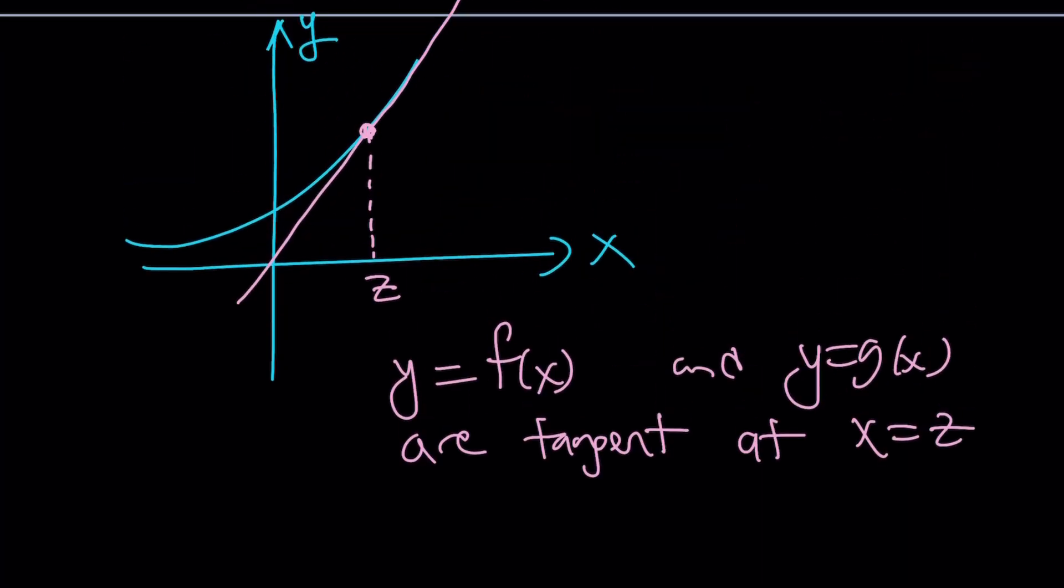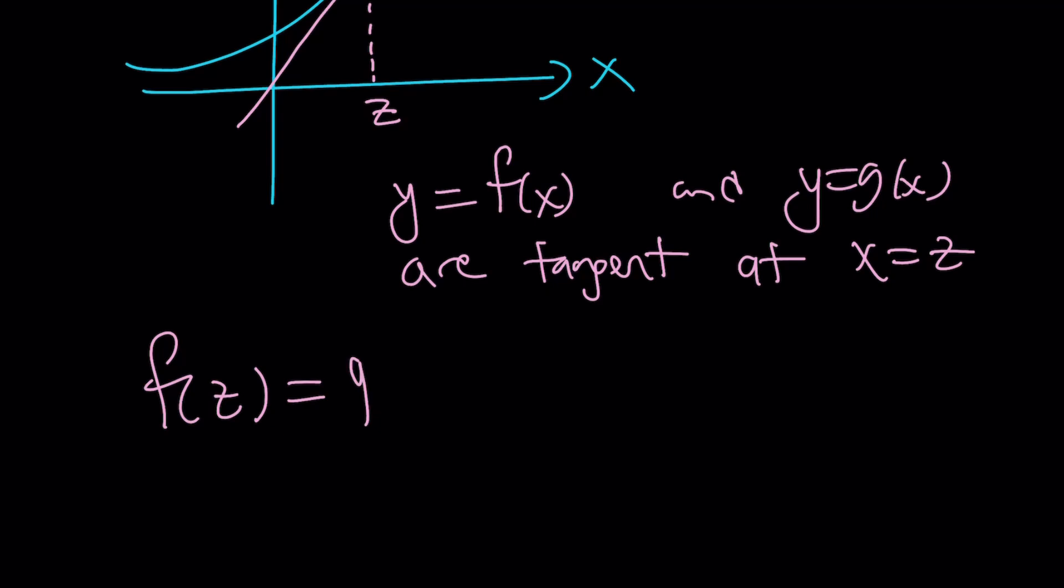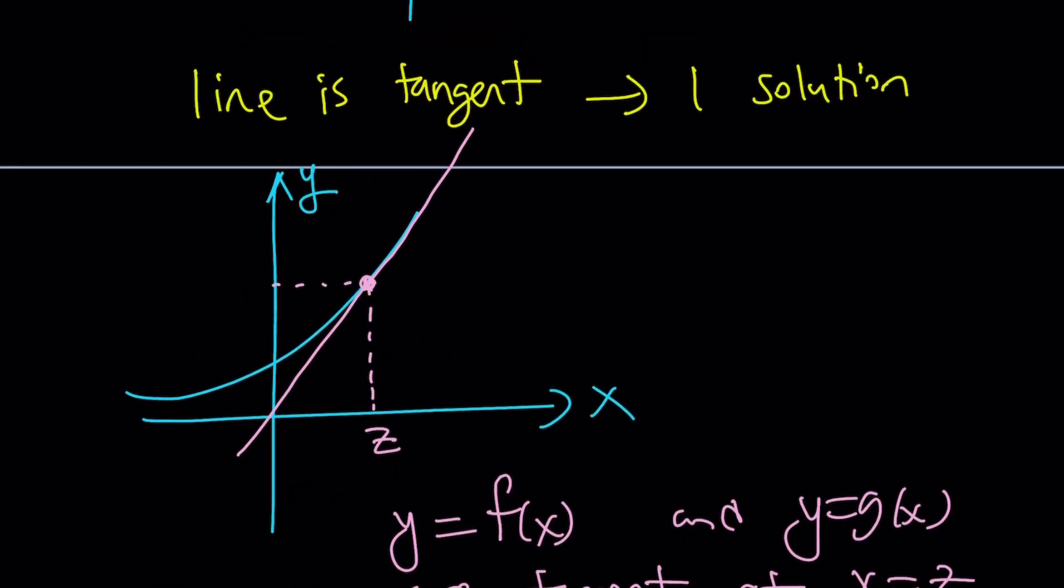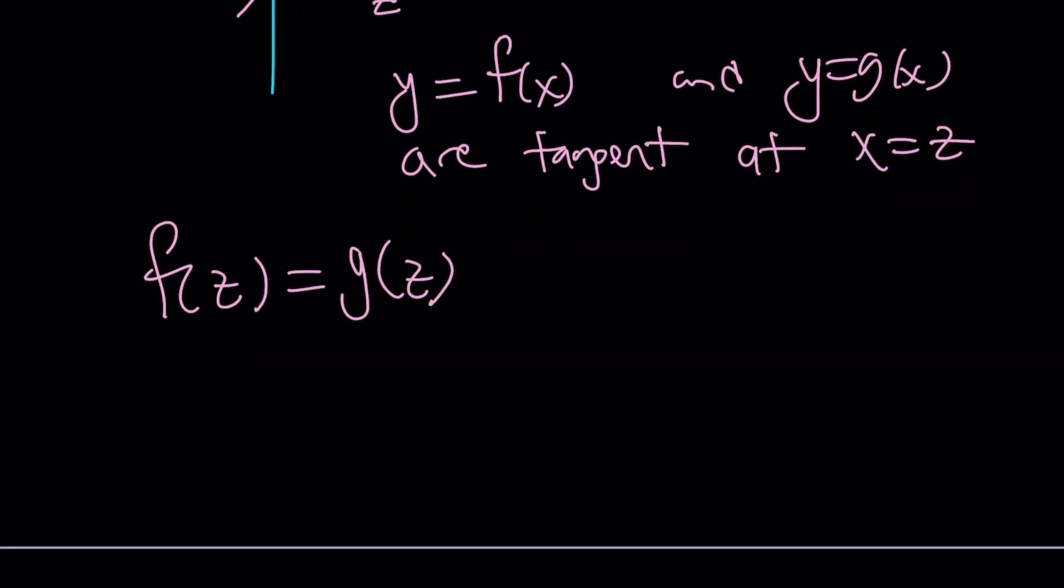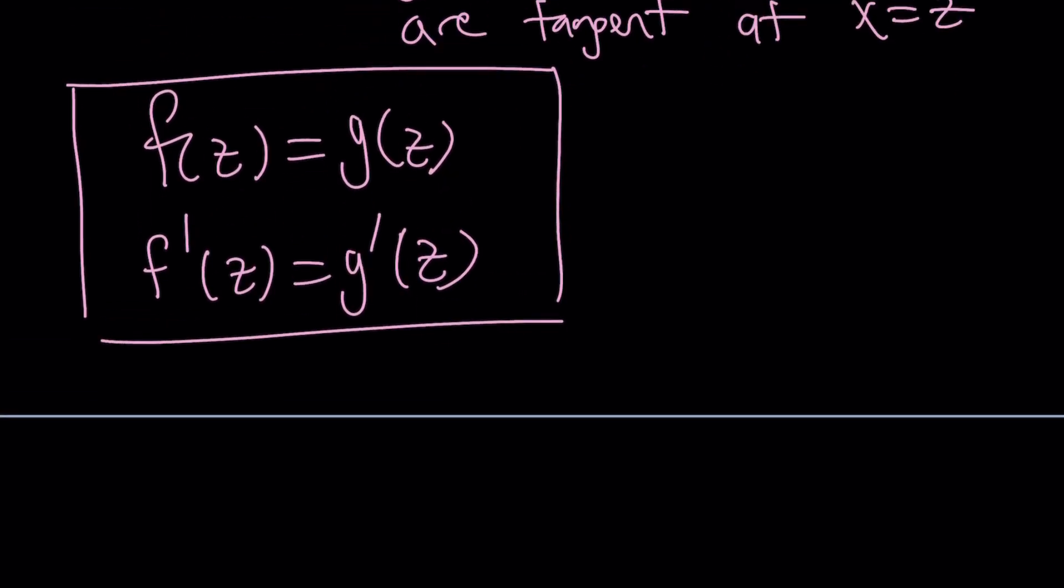If f of x and g of x are tangent at x equals z, then two things happen. First of all, they have the same y value. So f of z and g of z are going to be equal. But not only that, they're going to have the same slope at that point. The slope of the tangent line to the curve is actually the tangent line, or the line is the tangent line. So how do you find the slope of a tangent line? By differentiating the function at z and differentiating the other function at z. So these two conditions have to be satisfied for our lines or curves or functions, whatever, to be tangent.